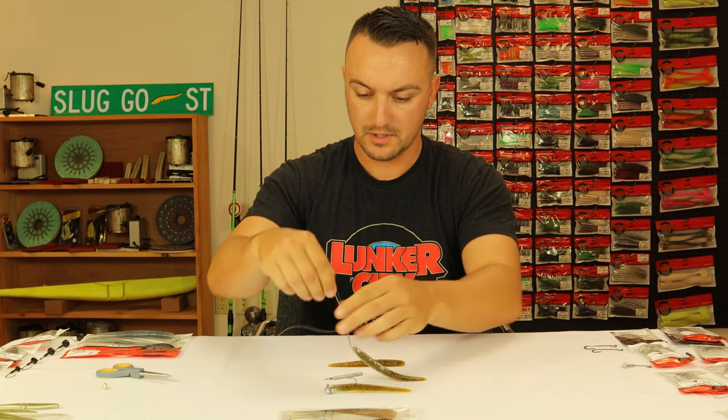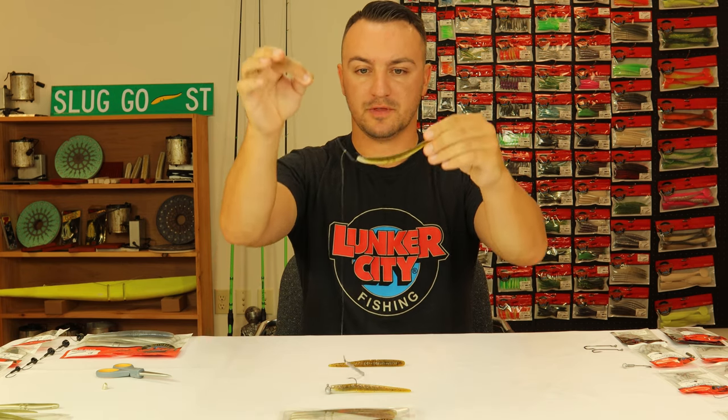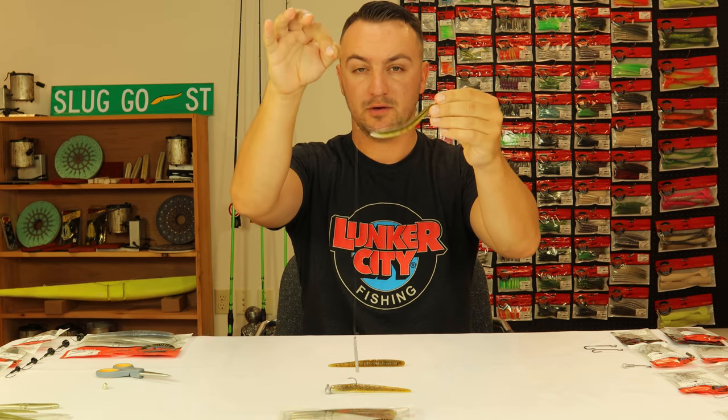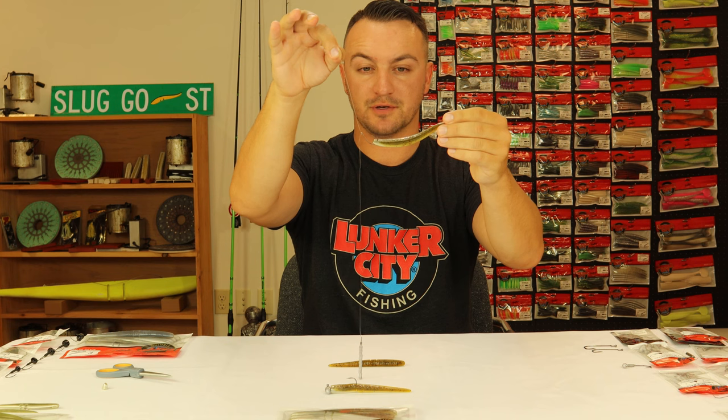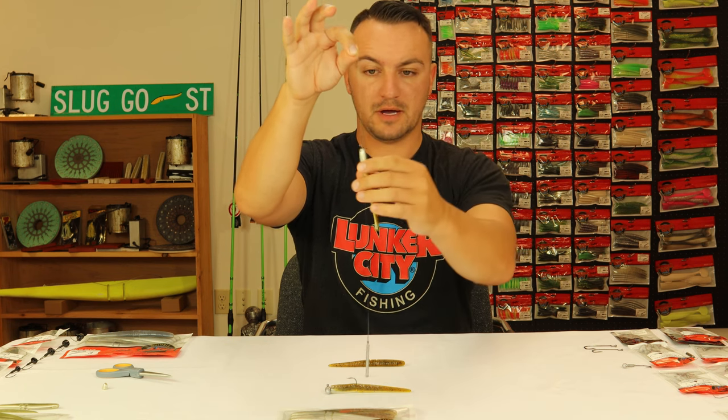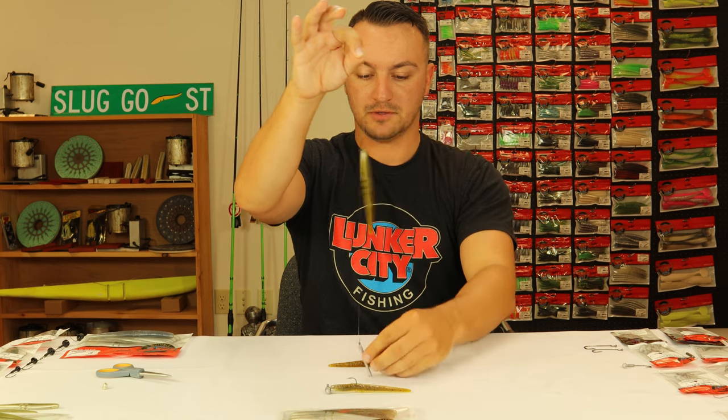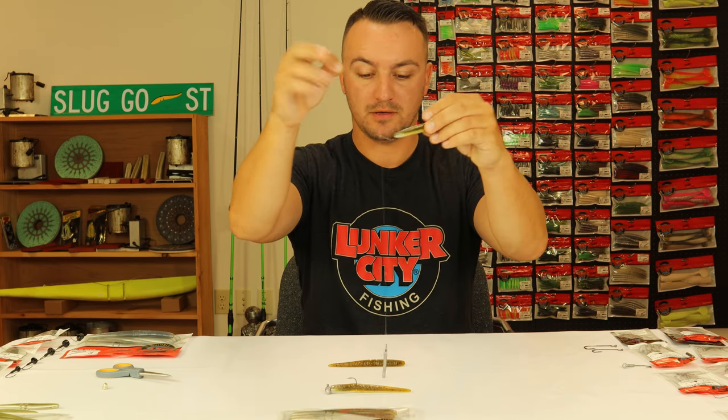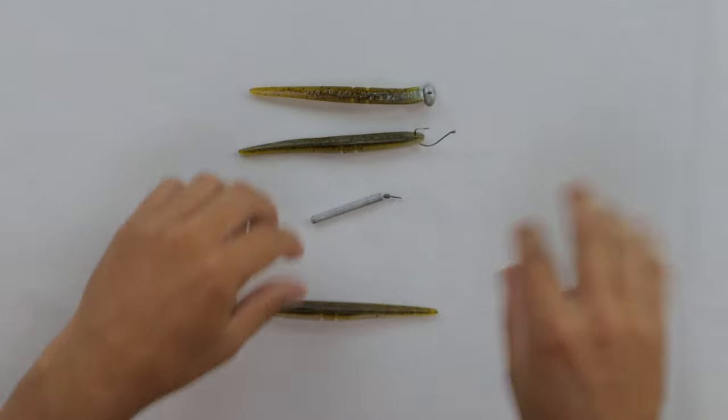So that's option number two, and I'll just show you on the front camera here what that looks like. So you have the 1-0, which is the bigger size VGB drop shot hook, on the 4.5-inch Sluggo, all the way down, about 12-inch leader, down to a quarter ounce Bakudan drop shot weight. So that's option number two.